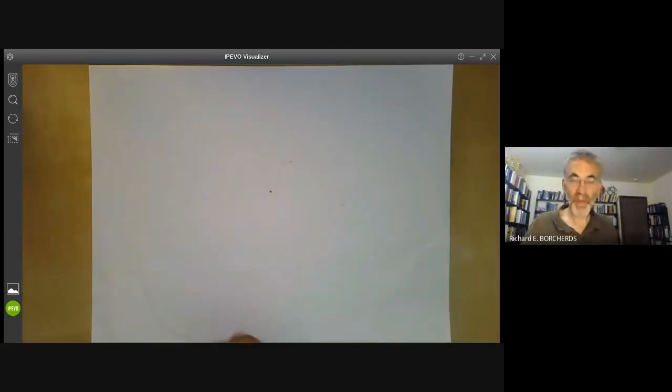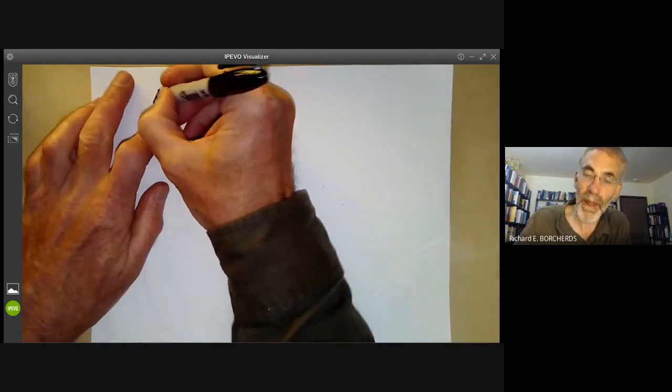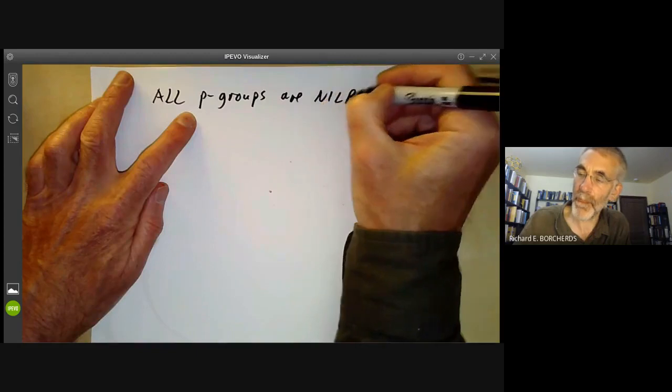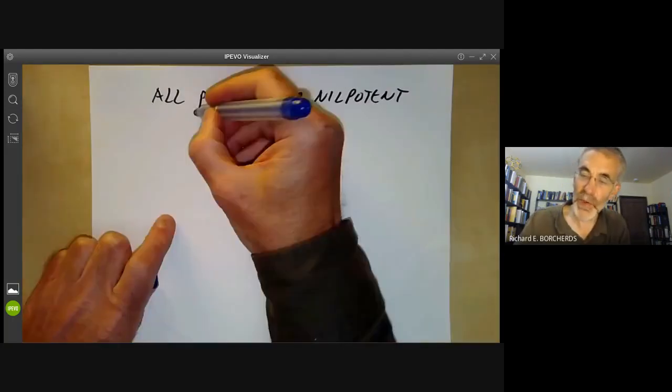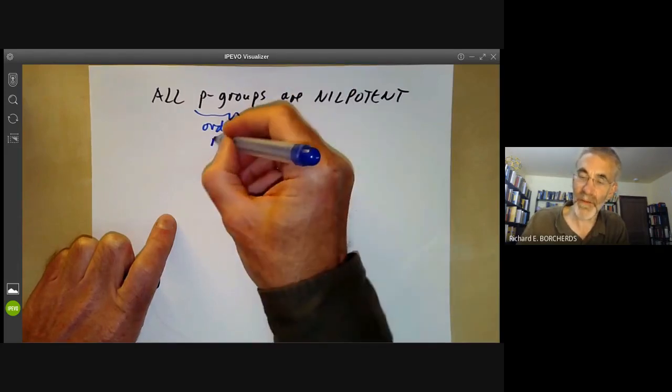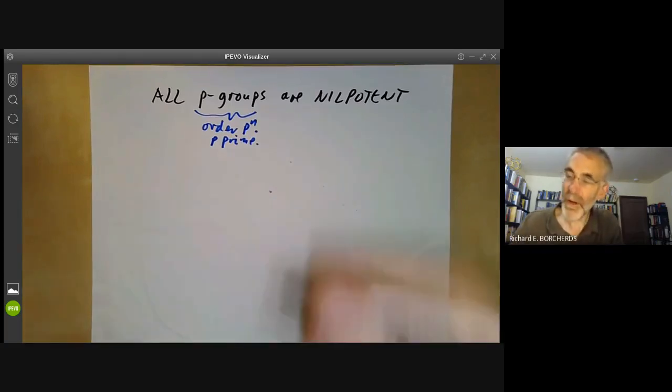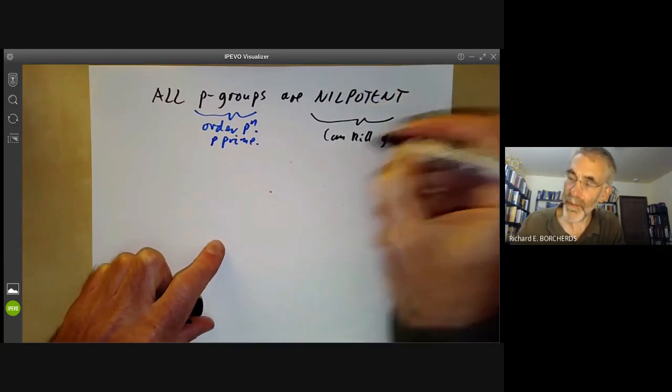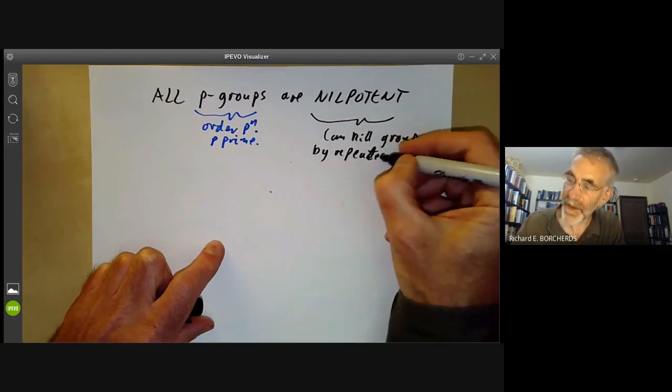I'll just finish by pointing out an important consequence of this. The consequence is that all P groups are nilpotent. I'll explain what nilpotent means in a moment. So a P group means order a power of P for some P prime. Nilpotent means we can kill the group by repeatedly killing the centre.